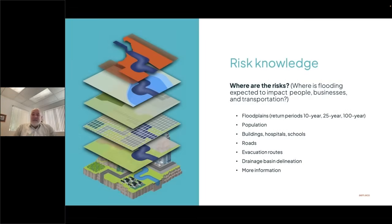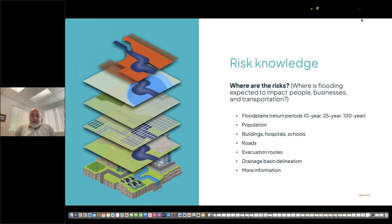So what is risk knowledge? It's gaining information on where things are — in this case, like floodplains: what existing floodplain information is available, where are populations, where are the actual people that could be impacted by the flooding.